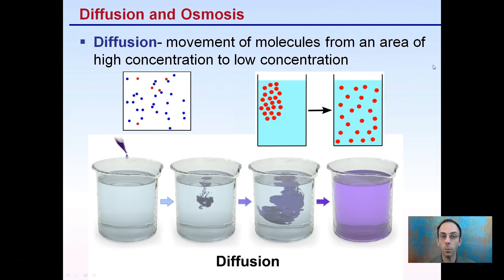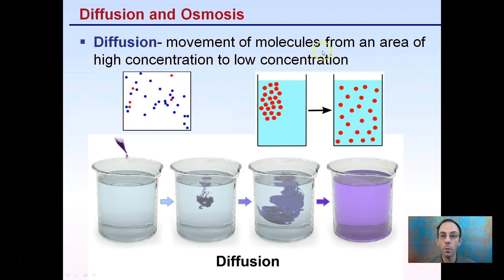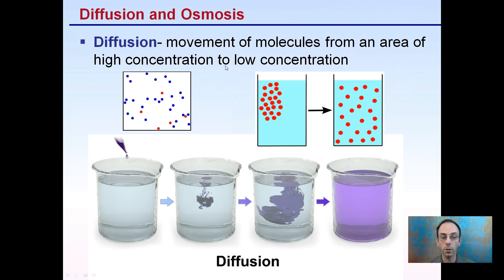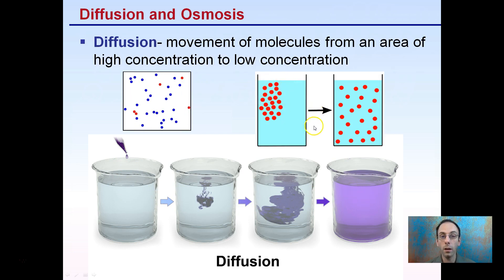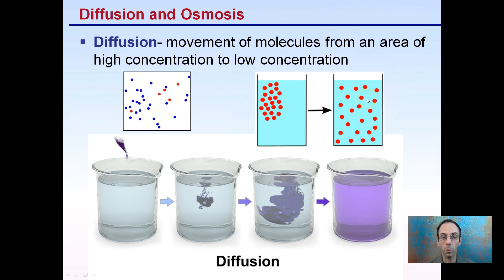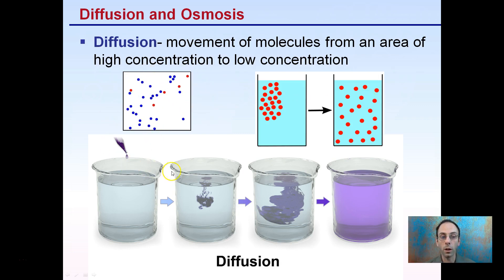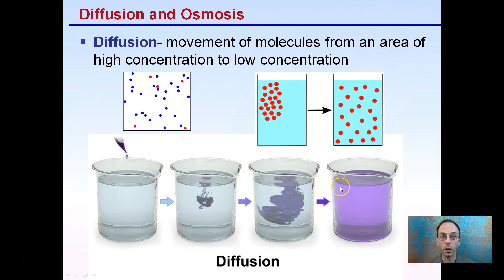Before I talk about osmosis, let's talk about diffusion. Diffusion is the movement of molecules from an area of high concentration to an area of low concentration. We see that with a drop of food dye diffusing out in the container here — the area of high concentration equally spreading out to an area of low concentration over time. The natural movement of the molecules will eventually stir this up and allow it to become homogenized.